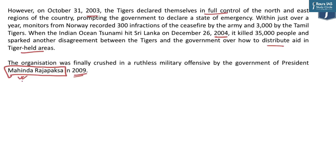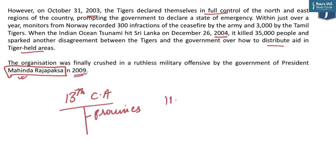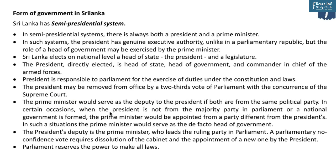The 13th Constitutional Amendment of Sri Lanka is seen as the only hope to solve the Tamil question because it has provision for devolution of power to provinces. The Tamil population is presently around 11% in Sri Lanka, so there is no way a government can be formed representing their aspirations at the national level. But in the northern and eastern provinces where they are dominant, they can gain substantial power. Devolution of power is one way of bridging the gap and empowering Tamil people, but that is not an easy task as long as Sri Lanka has a unitary nature in its governance.